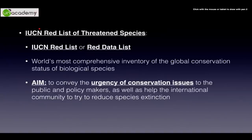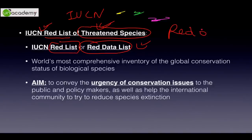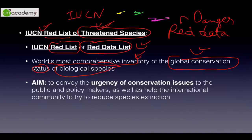IUCN has something called the Red List of Threatened Species — but remember, IUCN is much more than just the Red List; it also has yellow, green, and purple lists. The Red List, also called the Red Data List, is the world's most comprehensive inventory of the global conservation status of biological species. Its aim is to convey the urgency of conservation issues to the public and policymakers and to reduce species extinction.